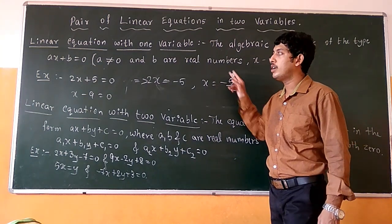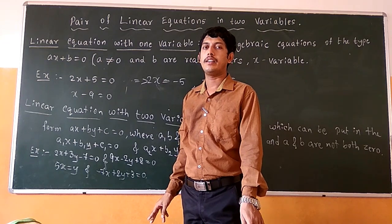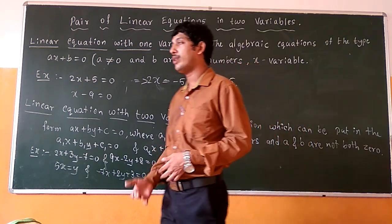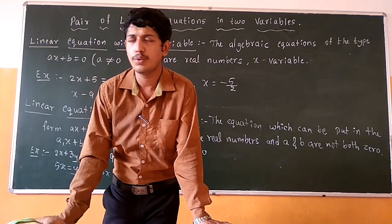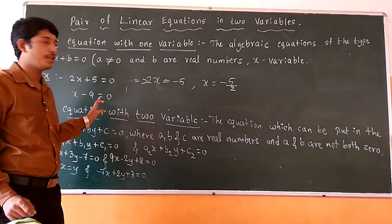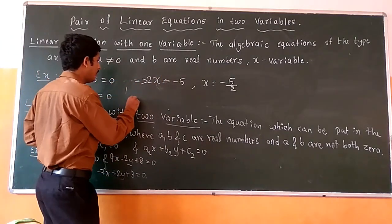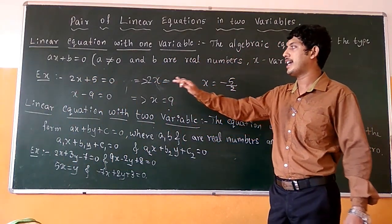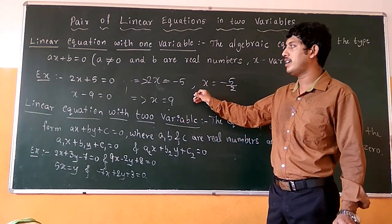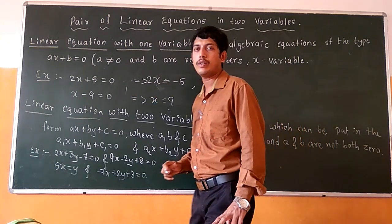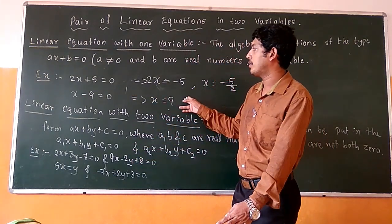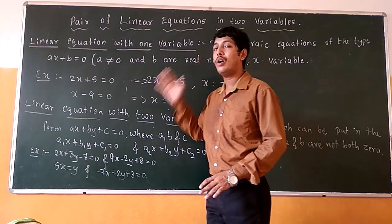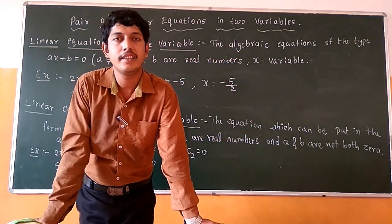Similarly, we have another equation: x minus 9 equals to 0. We have to find out what is the solution of this linear equation. Very simple — x minus 9 equals to 0, so minus 9 goes to the other side and it becomes x equals to 9. So x equals to 9 is the solution of the linear equation x minus 9 equals to 0, or x equals to 9 is the root of this equation.